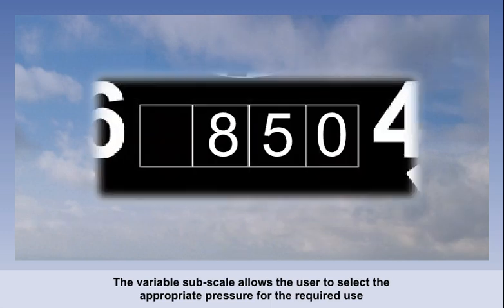Our initial problem has still not been solved. We need the altimeter to give us a height above a physical surface, not a pressure surface. We can solve this by having a variable subscale. In other words, we can manually select what pressure the altimeter will use as the zero point. This scale is adjustable from 850 to 1050 hectopascals.